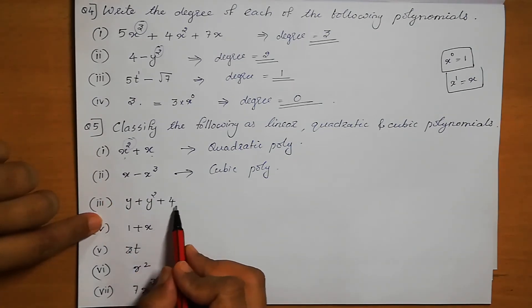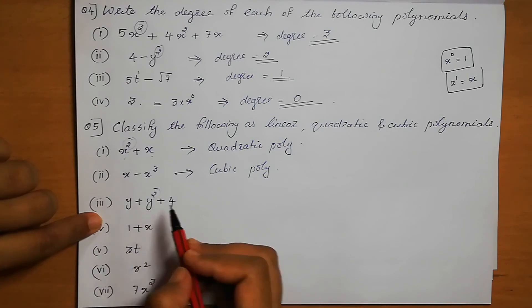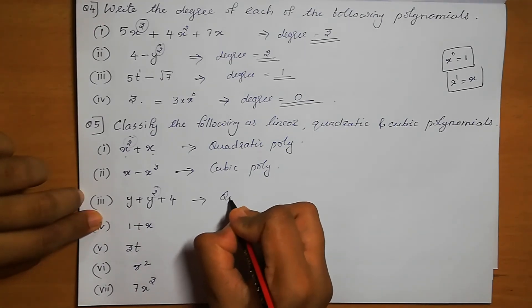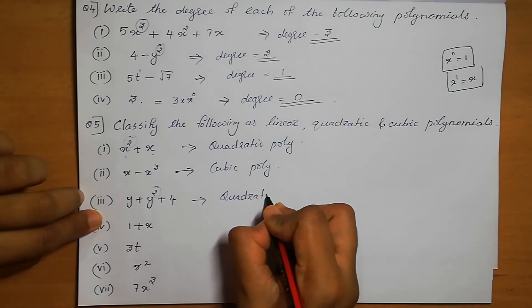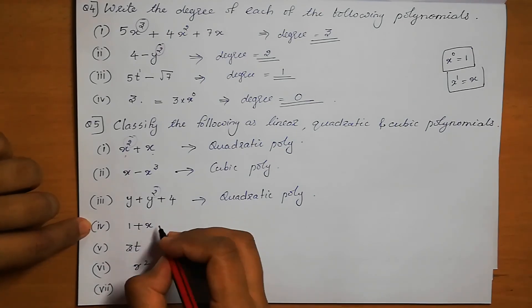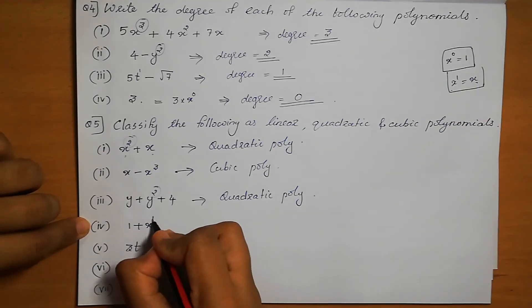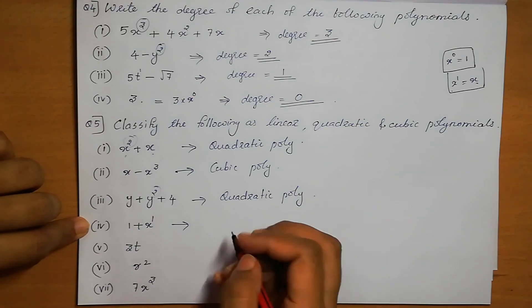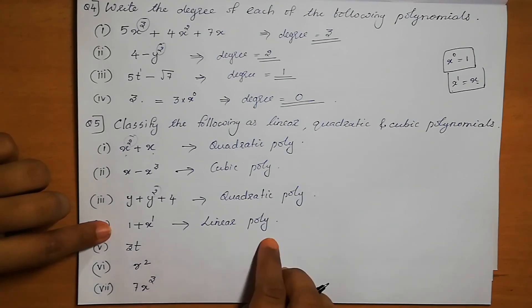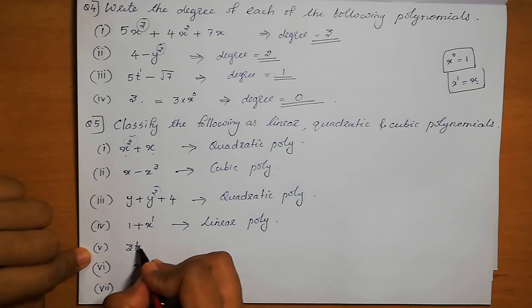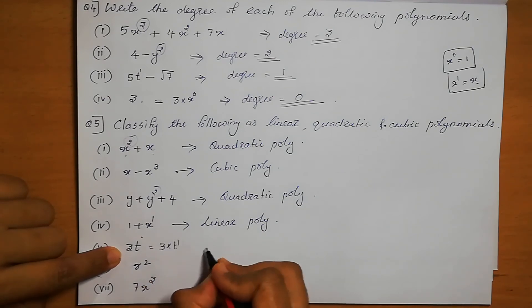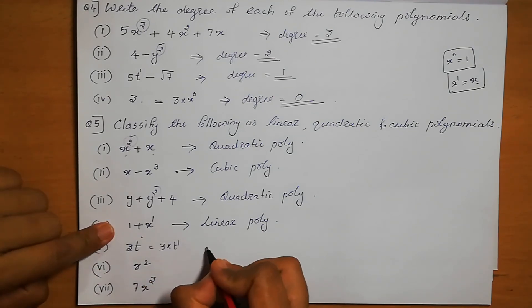Question 3: y plus y squared plus 4. The variable is y and the highest power is 2, so this is a quadratic polynomial. Question 4: 1 plus x. The variable is x with power 1, so this is a linear polynomial. Question 5: 3t. t means t power 1, so the degree is 1 and it is a linear polynomial.